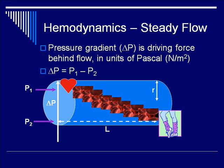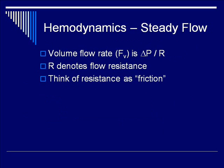Bear in mind that delta P is equivalent to voltage in the electrical analogy. The volume flow rate of blood is delta P, the gradient, divided by the resistance. This resistance denotes flow resistance, and for the time being we'll think of it as friction.